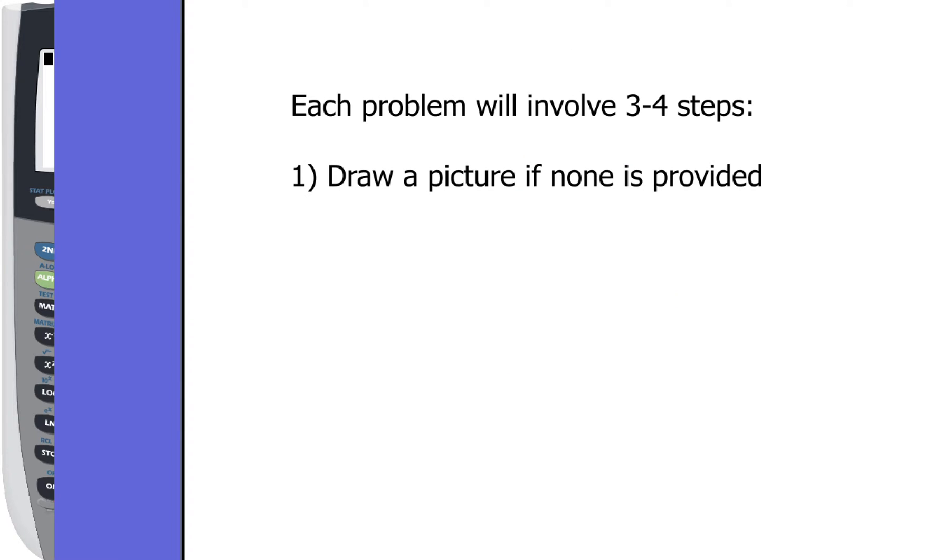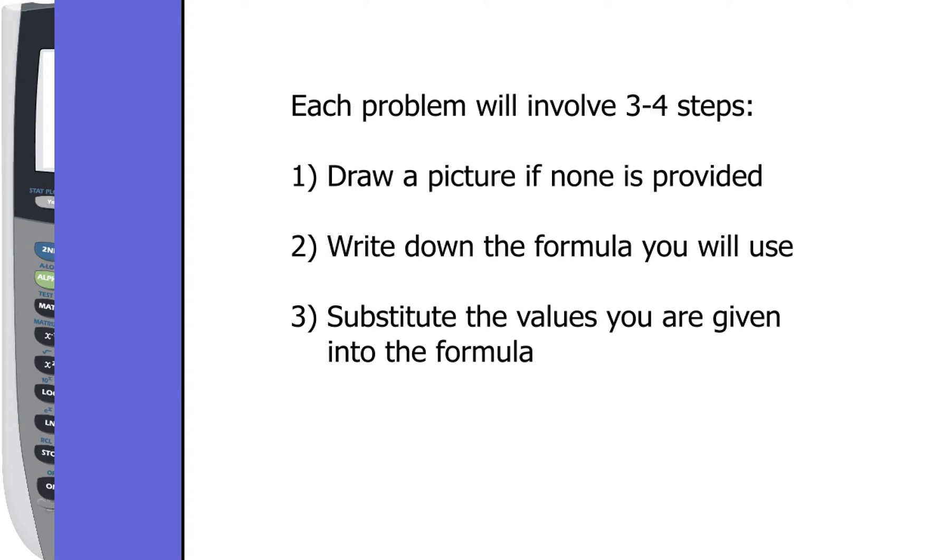So with each one of these, each problem is going to involve about three to four steps. The first step is to draw a picture if none is provided. You always want to draw a picture to help represent the situation. Next, write down which formula you're going to use. Third step is going to be to substitute the values that you're given into this formula. Lastly, we will solve for the unknown and make sure that you include units, because you always want to label units appropriately.